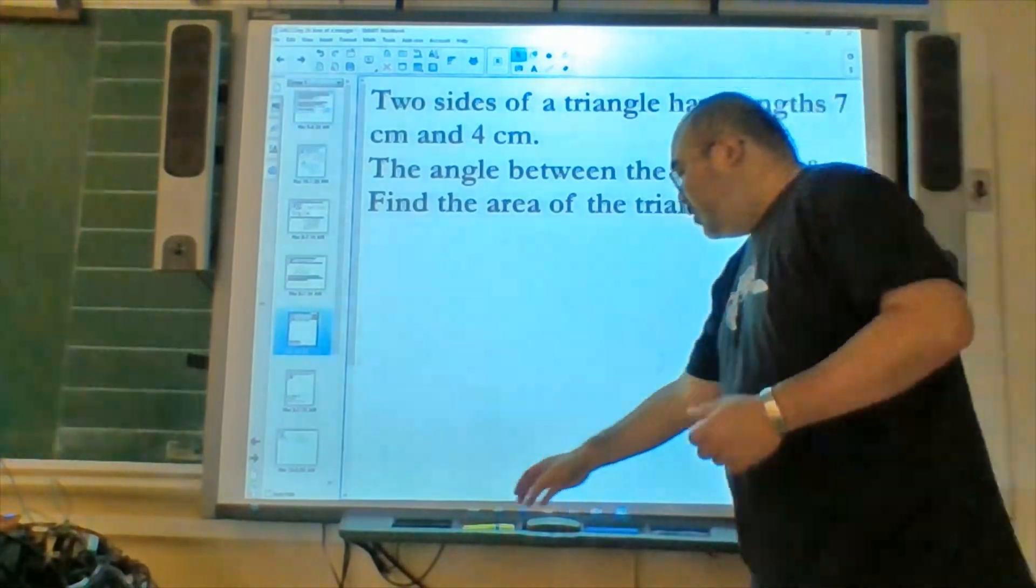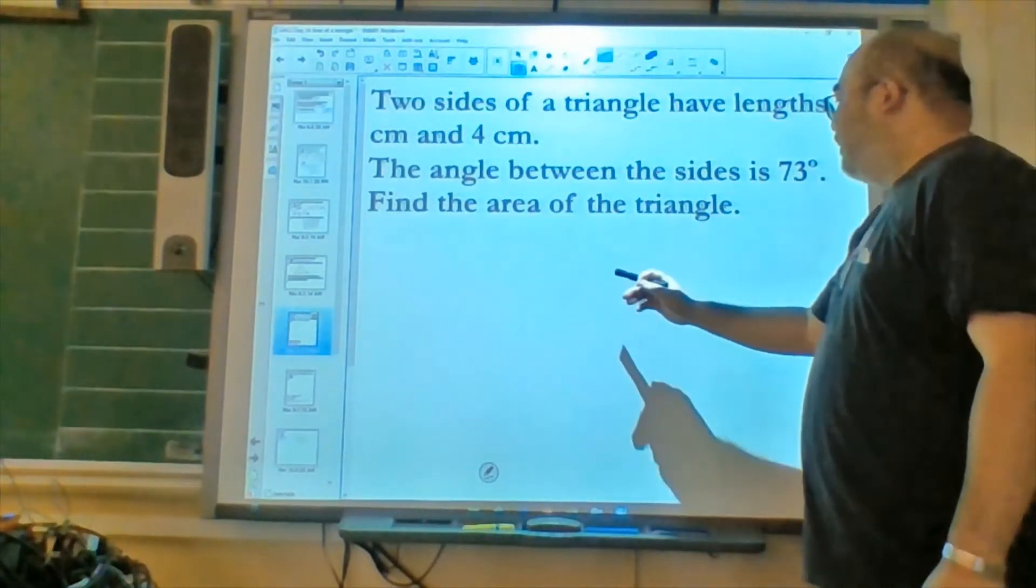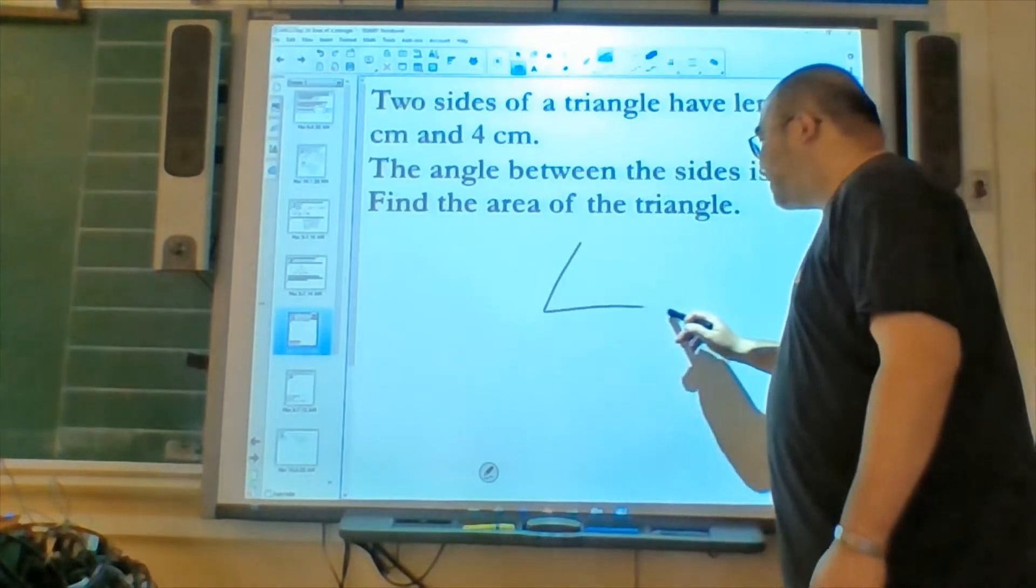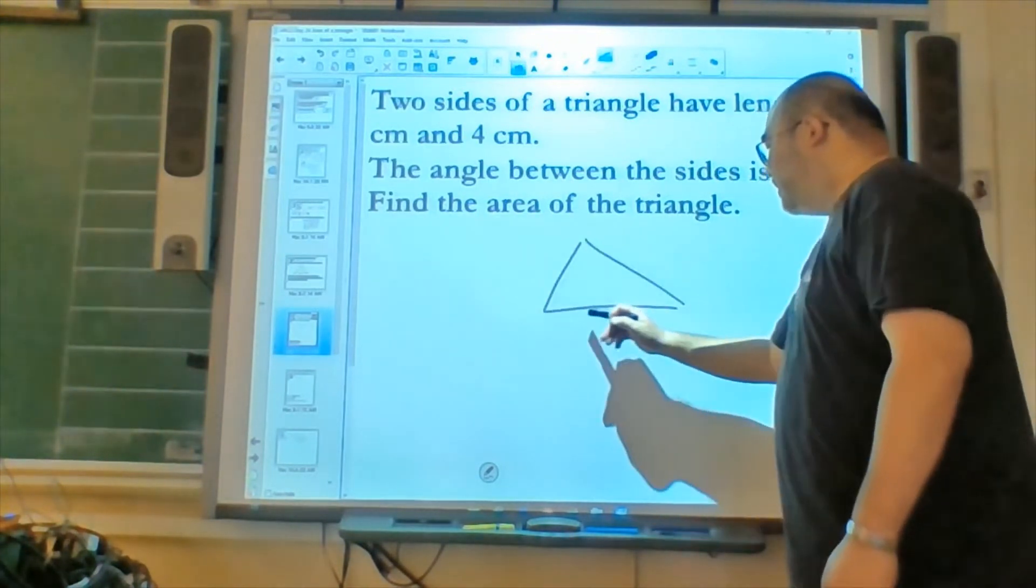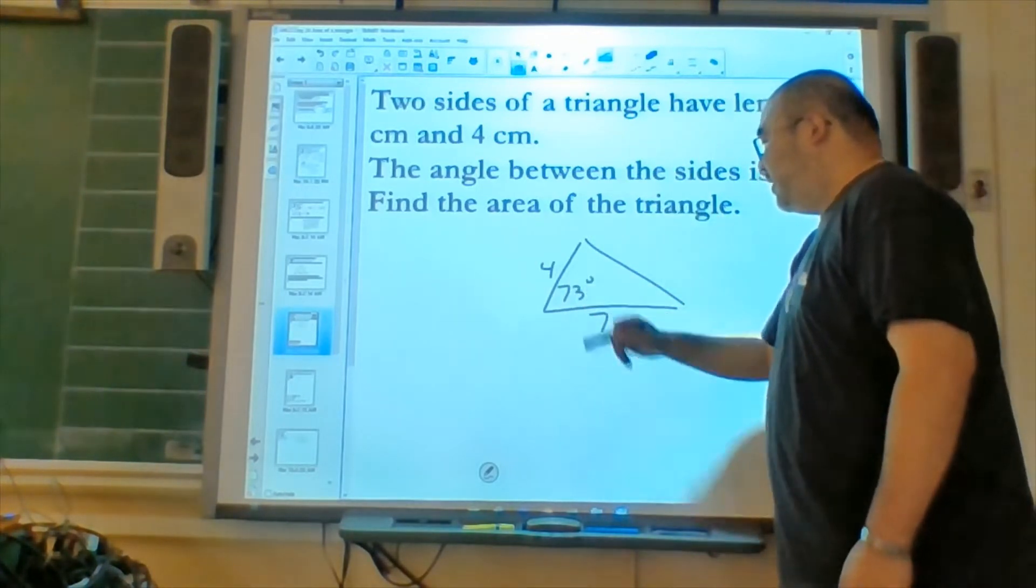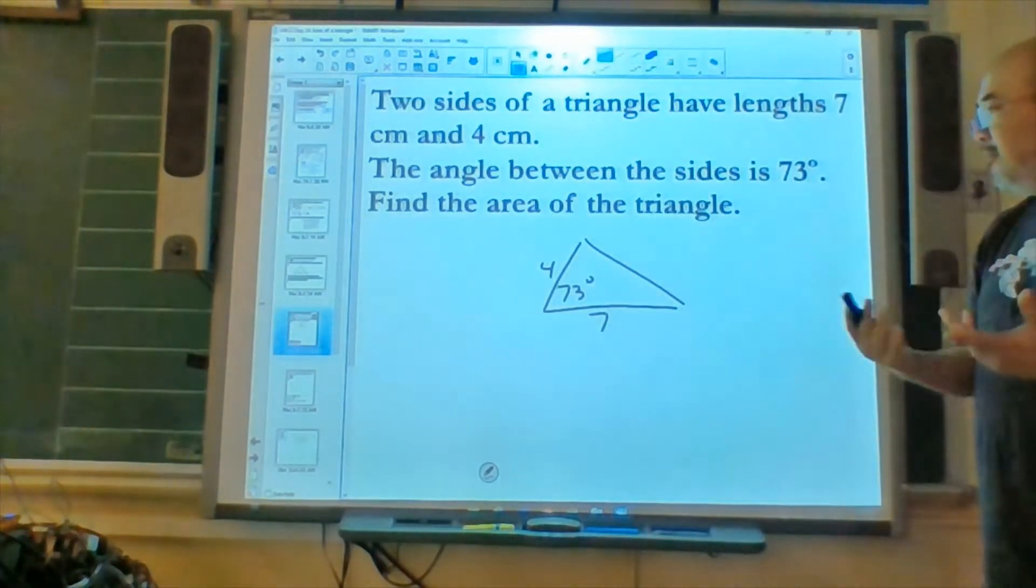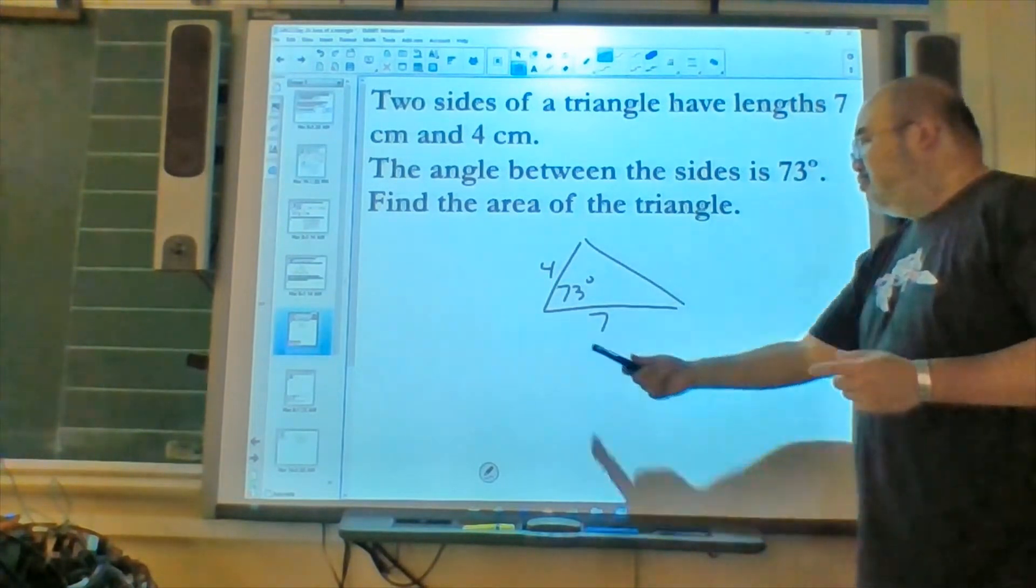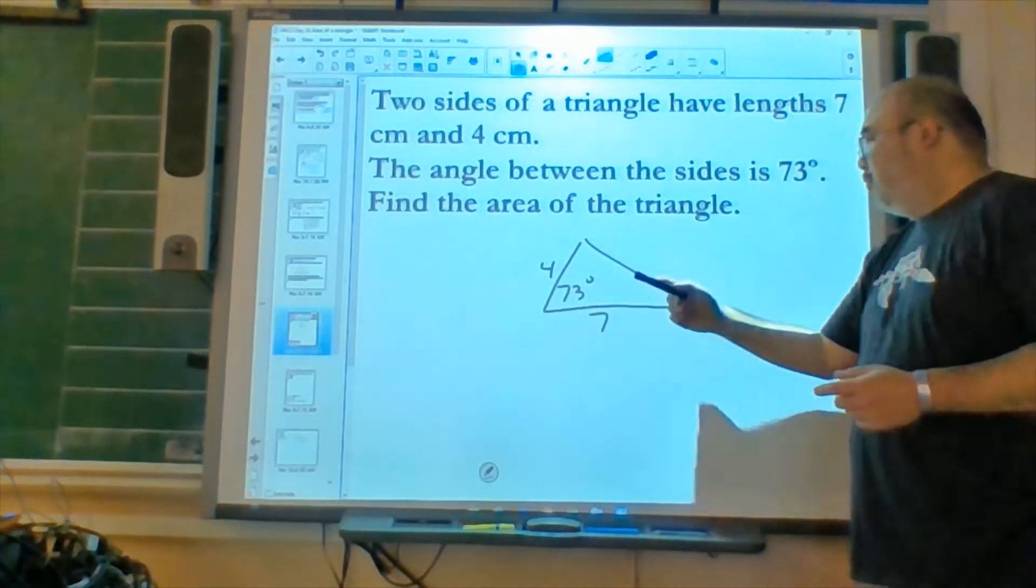We're going to draw this triangle here. So let's see, 4 and 7. I like making the longer side my base. Here's 7, here's 4, and the angle between them is 73 degrees. Well, here we have two sides, angle included. Let's use our formula.